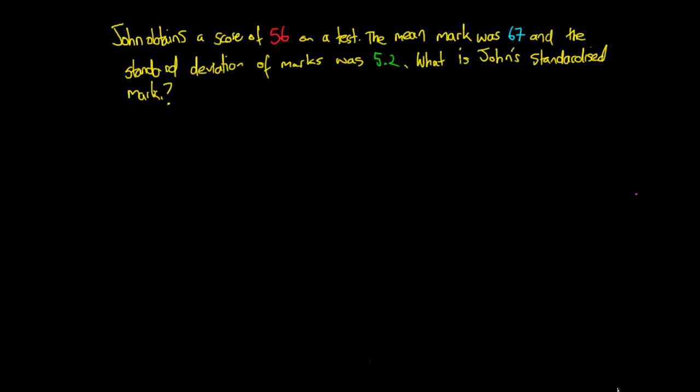So what we want to do is take out our information which is going to be relevant to us. First we want to work out what we're going to do. It says what is John's standardized mark? So we know we're going to be calculating this standardized mark which we call z-scores. And we know John obtained 56, the mean was 67, and the standard deviation was 5.2.